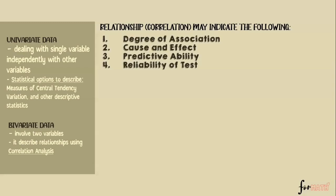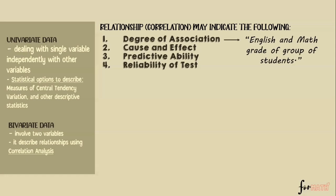A relationship may indicate the following. Number one: degree of association. It tells us what type of relationship exists between two variables — is it positively correlated or negatively correlated? For example, we have English and math grades of a group of students. If you get a high grade in English, can you also get a high grade in math? Or if you get a low grade in English, do you also get a low grade in math?